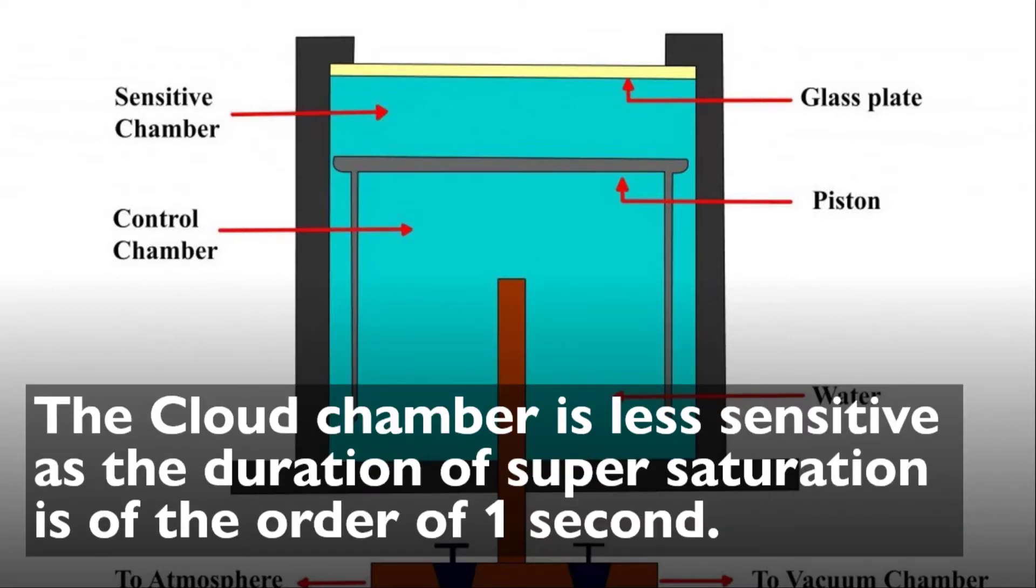The cloud chamber is less sensitive as the duration of supersaturation is of the order of 1 second. When the diaphragm goes down, it causes expansion and supersaturation, then the diaphragm goes up. This supersaturation is of the order of 1 second. This is its demerit.